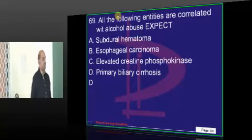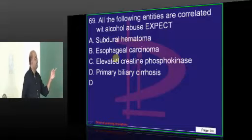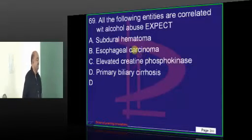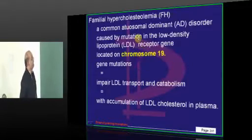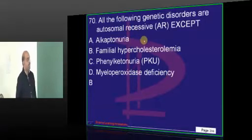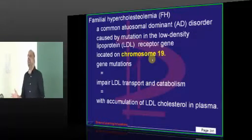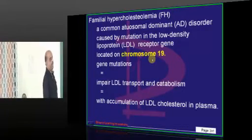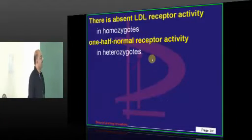Coming to alcohol abuse — it can lead to subdural hematoma, esophageal cancer, and elevated CPK due to myopathy, but it is not implicated in primary biliary cirrhosis. Familial hypercholesterolemia is an autosomal dominant disorder. Chromosome 19 is where the LDL receptor gene is located — this is what you have to ultimately remember.